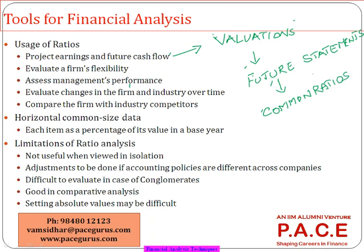Historically, analysts compute ratios for the last five years or so. If those ratios are very consistent, they say that for the future also they will put the same number. For example, if I look at a profitability ratio and for the last five years the company has been between 12% to 14%, what is the problem in assuming the next year will also be around 12 to 14%? If five years they have been at a similar number, probably the sixth year will be in the same range.